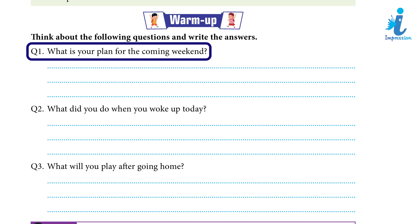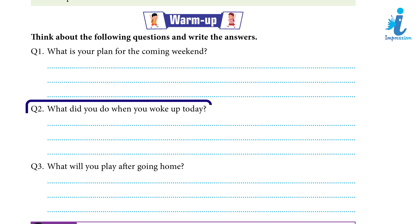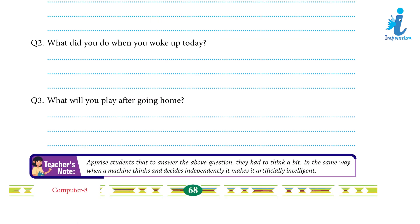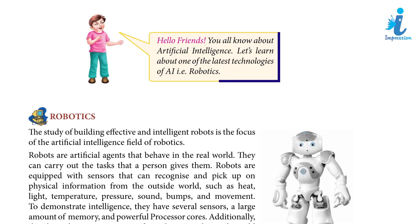Question 1: What is your plan for the coming weekend? Question 2: What do you do when you woke up today? Question 3: What will you play after going home? Teacher's note: Students had to think a bit to answer the above questions. In the same way, when a machine thinks and decides independently, it makes it artificially intelligent.